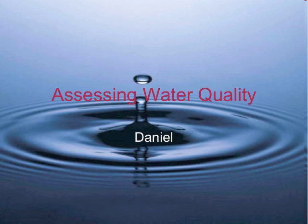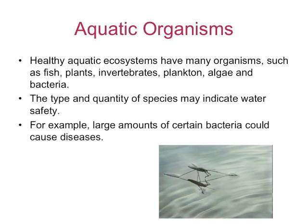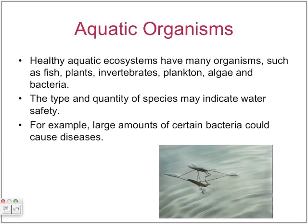Assessing water quality: certain types of aquatic organisms can help you tell how safe the water is or what type of water it is. For example, certain bacteria could cause diseases in the water.